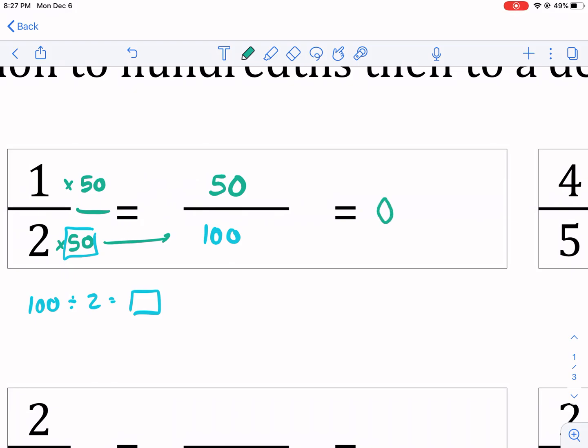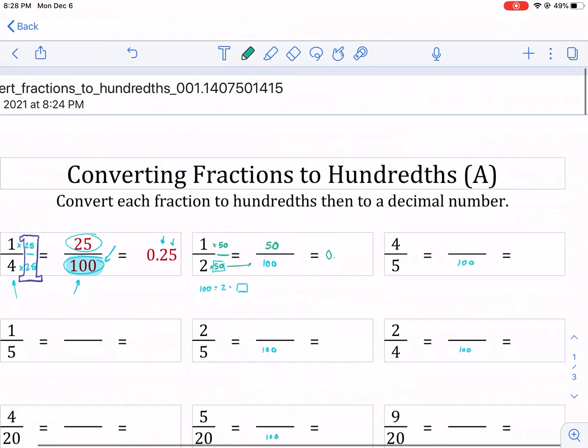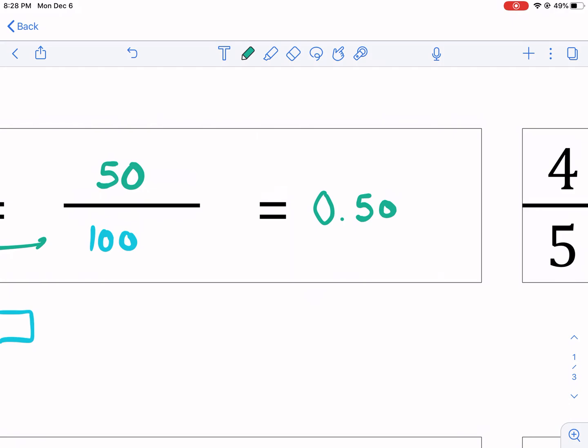How do we convert this now to decimal form? We're always going to start with zero. These are all going to have zero in the front of them. Now we have 50 hundredths. So we're just writing this number and this number will be to the hundredths place. That's one, two digits afterwards. And that's it. You're done. We're done with number two.